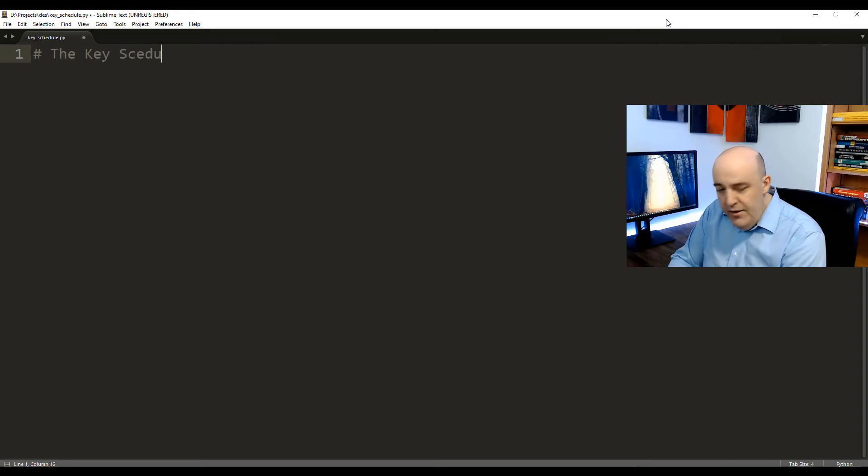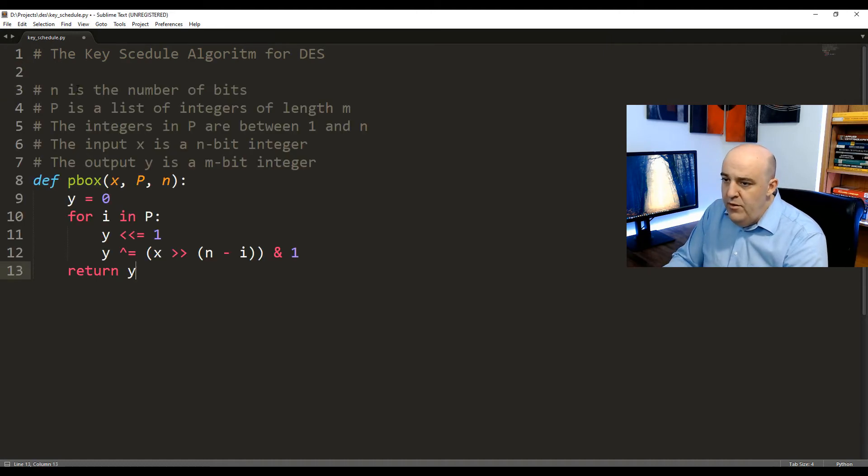Alright, let's type out the key schedule algorithm for DES. So as we talked about, the code for the P-box is this. And we're not going to review that since it's talked about in another video. But this is our main code that's going to be used to implement any P-box.